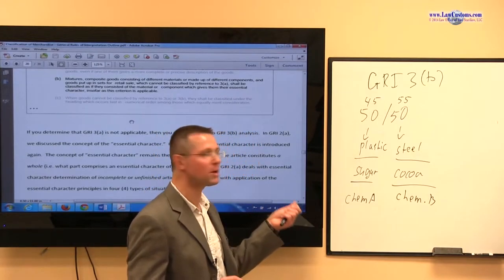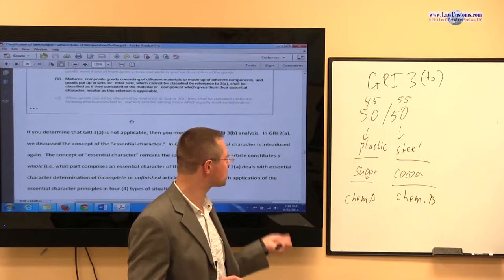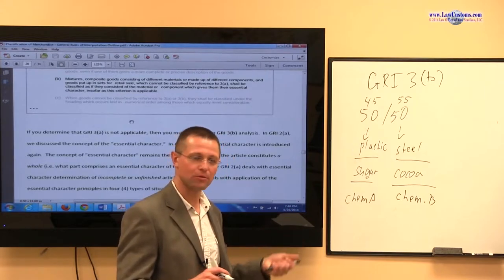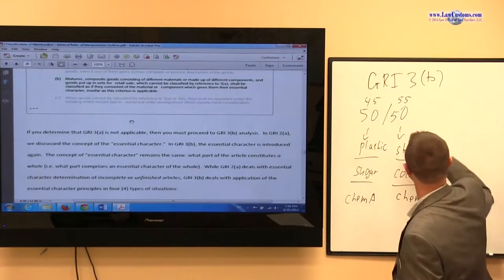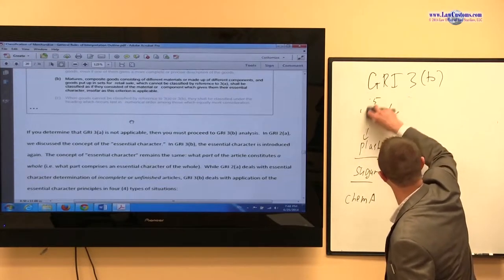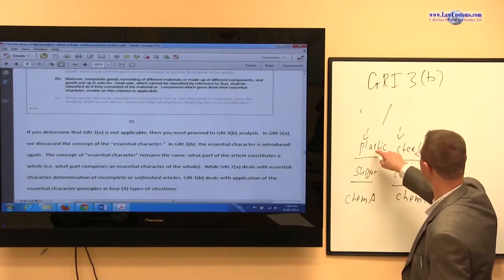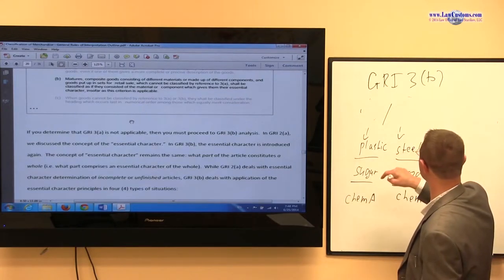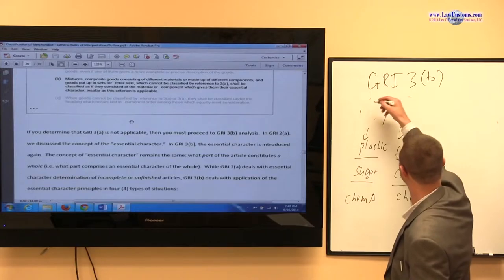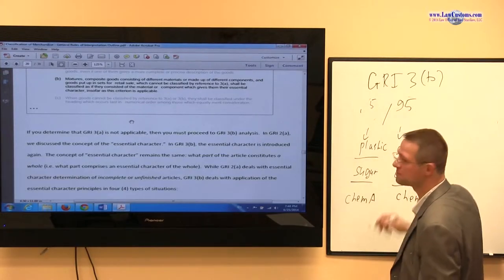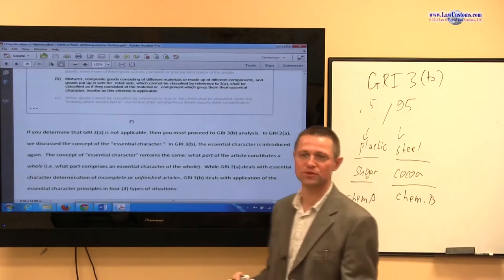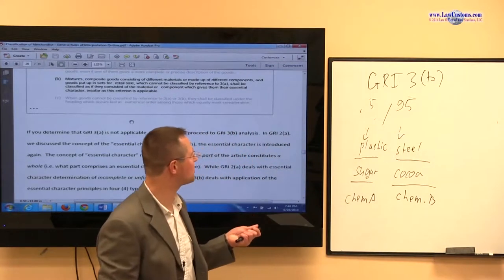But I'm not only talking about the numbers here, I'm also talking about the product. Because let me say this. So let's say instead of 50% plastic-50% steel, we have 5% plastic and 95% steel. What's essential, what's more essential for the product? Probably the steel, right?